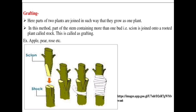The next vegetative reproduction type is grafting. In grafting, two plants are used. Parts of the two plants are joined in such a way that they grow as one plant.